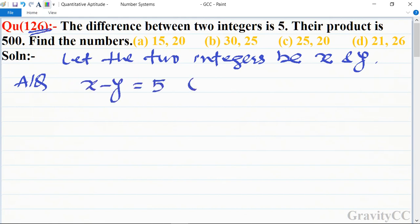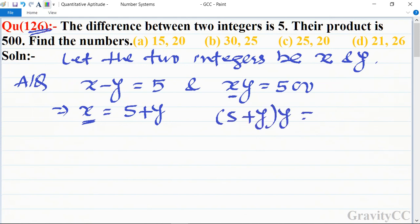5, and their product is equal to 500. So x is equal to 5 plus y. Now we put the value of x in here: 5 plus y into y is equal to 500, which implies y squared